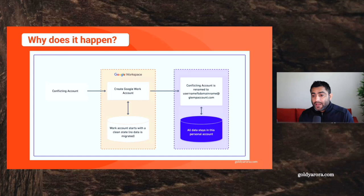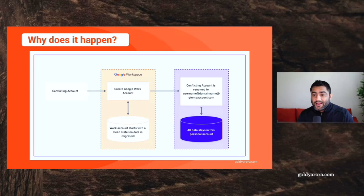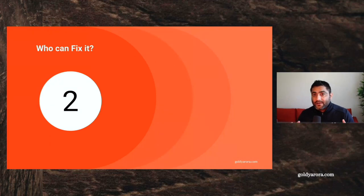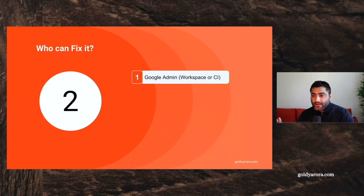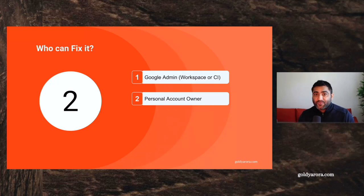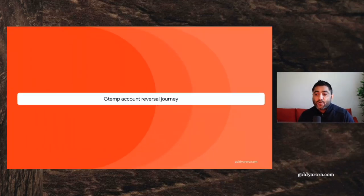That may have happened because your admin didn't pay enough attention or wasn't aware of this outcome. Now, for some reason, you need to change this email address back to your original. In this video I'll show you how to do that. First, let's understand who is required to fix it: number one, your Google admin — that can be your Google Workspace admin or Google Cloud Identity admin — and also the personal account owner, so your involvement is also required.